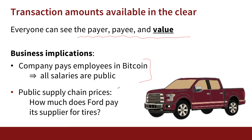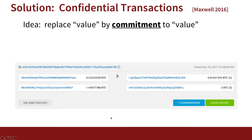Similarly, in a supply chain case, if Ford wanted to buy tires from its supplier and pay in Bitcoin, everybody would see exactly how much Ford is paying for its tires. So that is kind of unusable by businesses — it's a mismatch with business needs. The question is, what can we do? It turns out there's a beautiful idea that allows you to retain the property of public verifiability, but do so in a way that does not violate privacy.